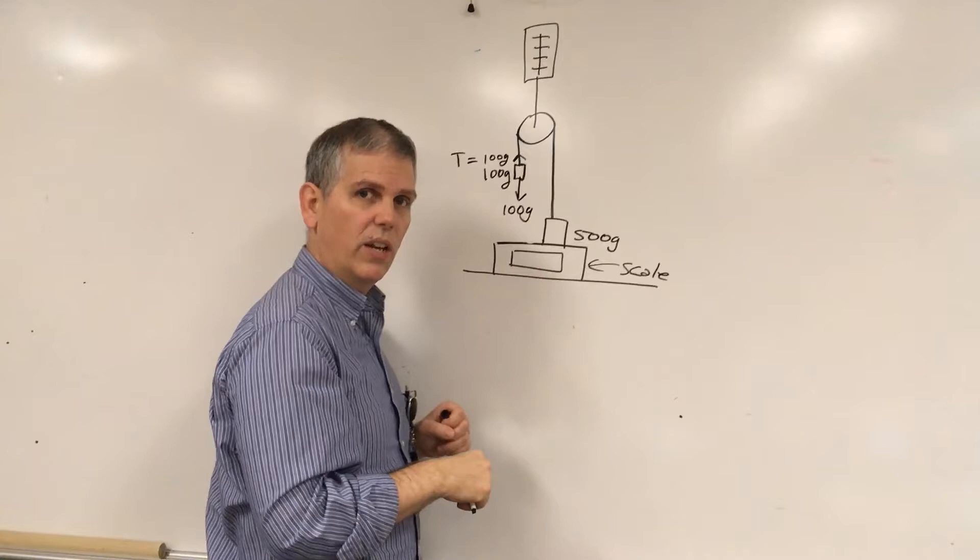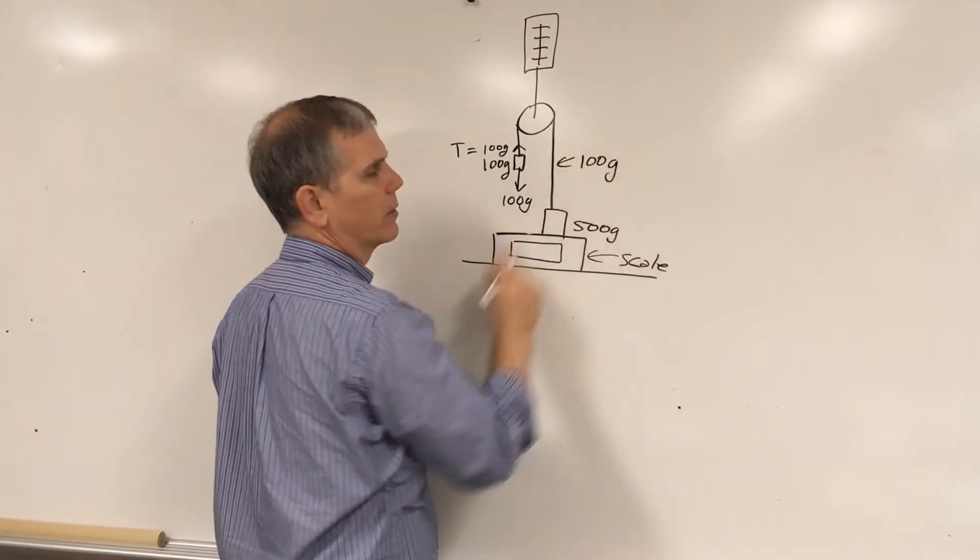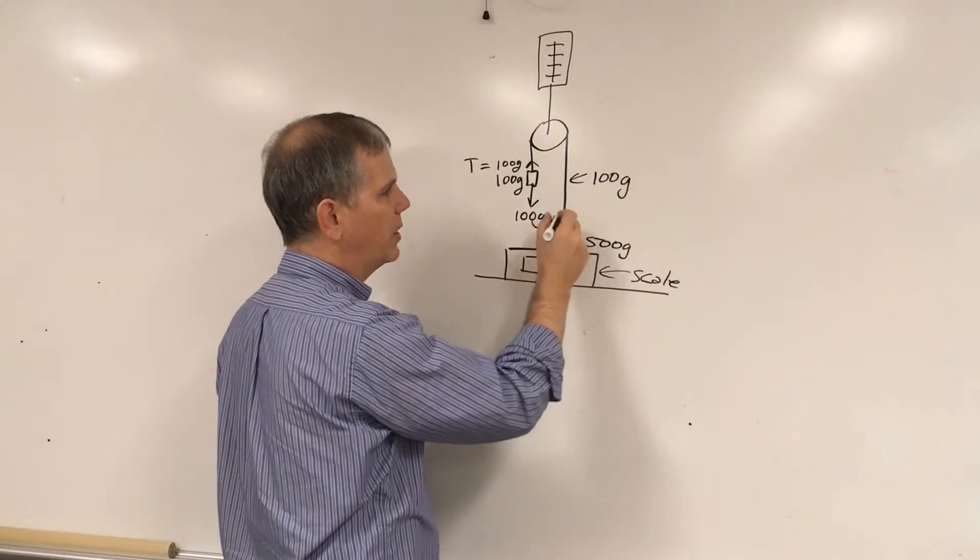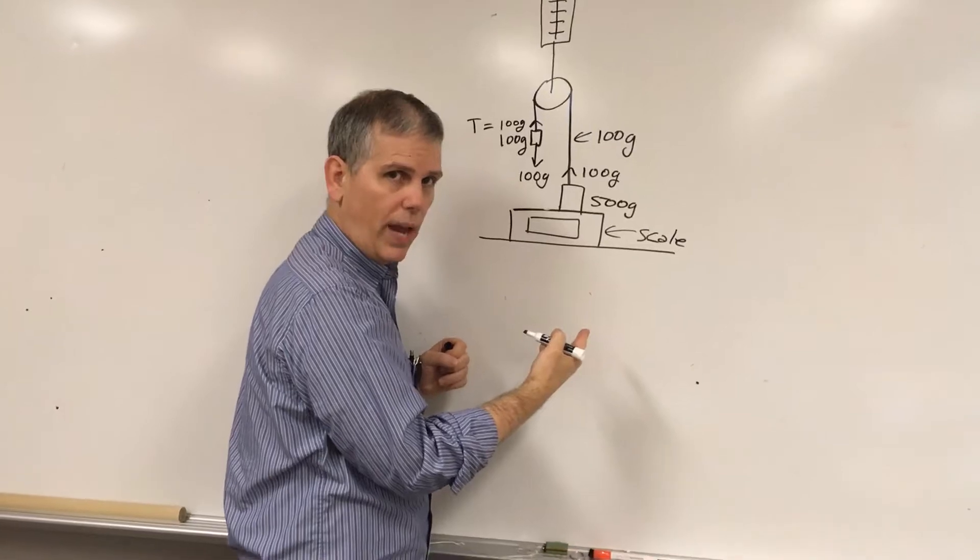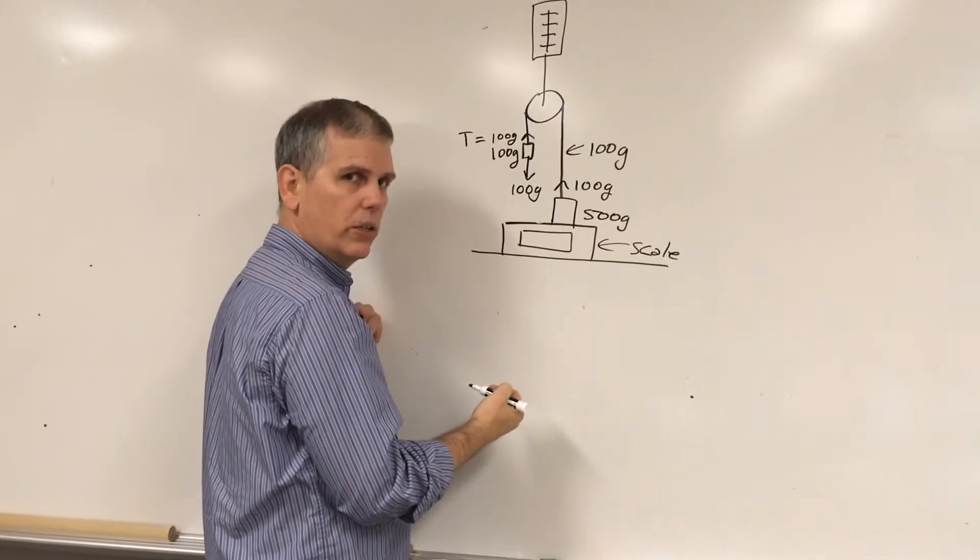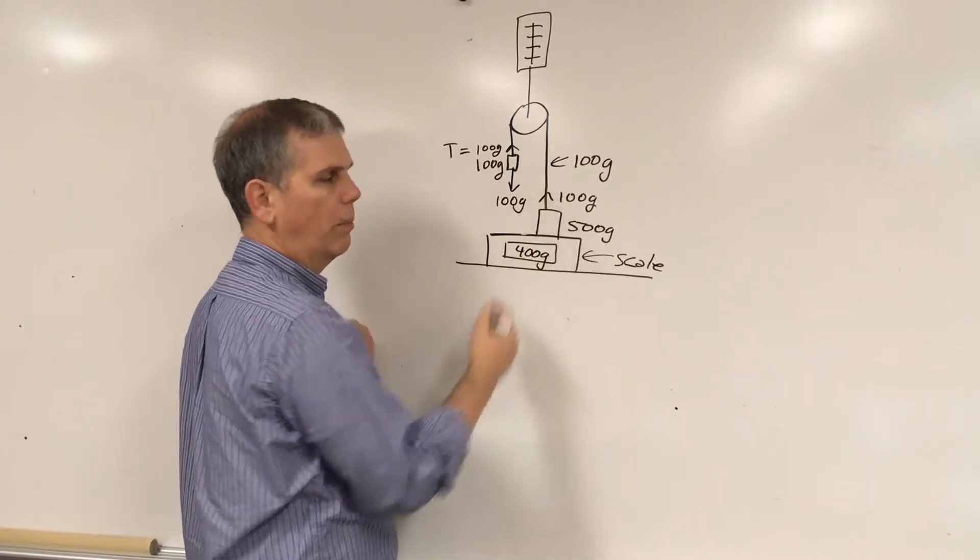Well since the tension in a rope is the same everywhere, this must be 100 grams, which means for this object there's 100 grams pulling up and 500 grams pulling down due to gravity. So this right here should read the difference which is 400 grams because the rope pulls up.